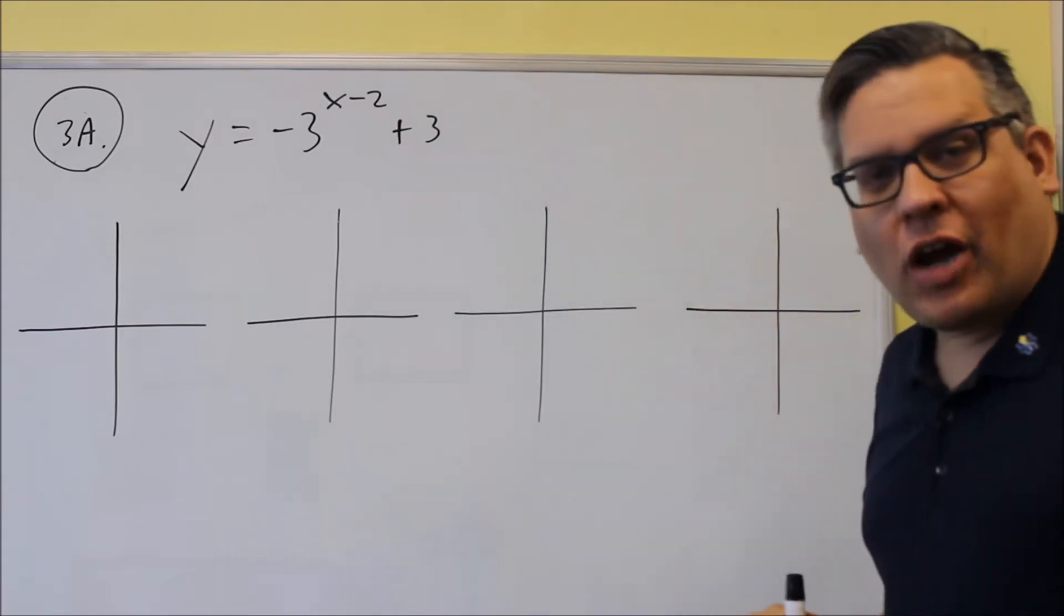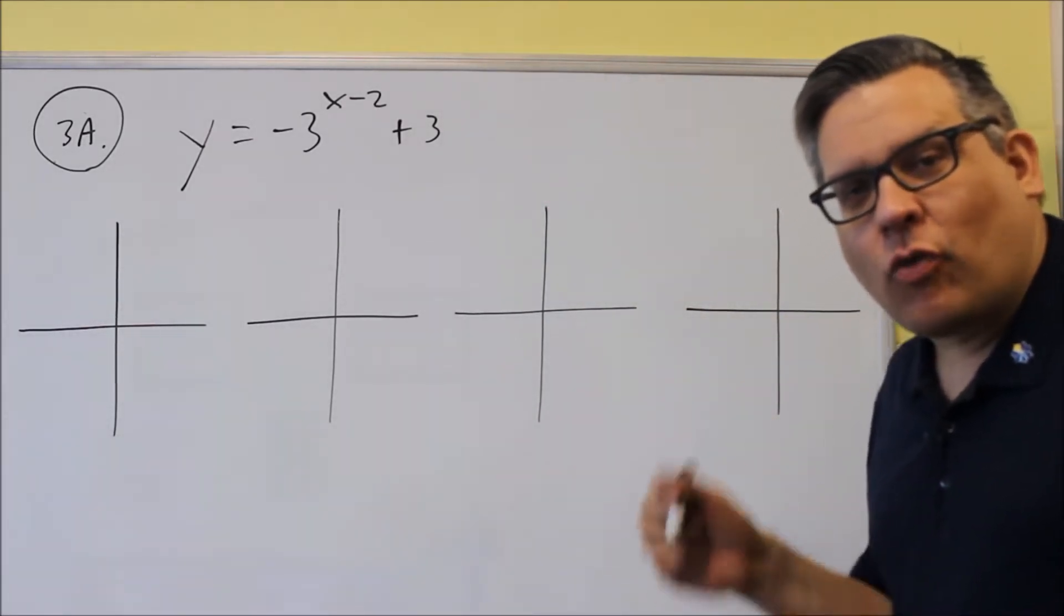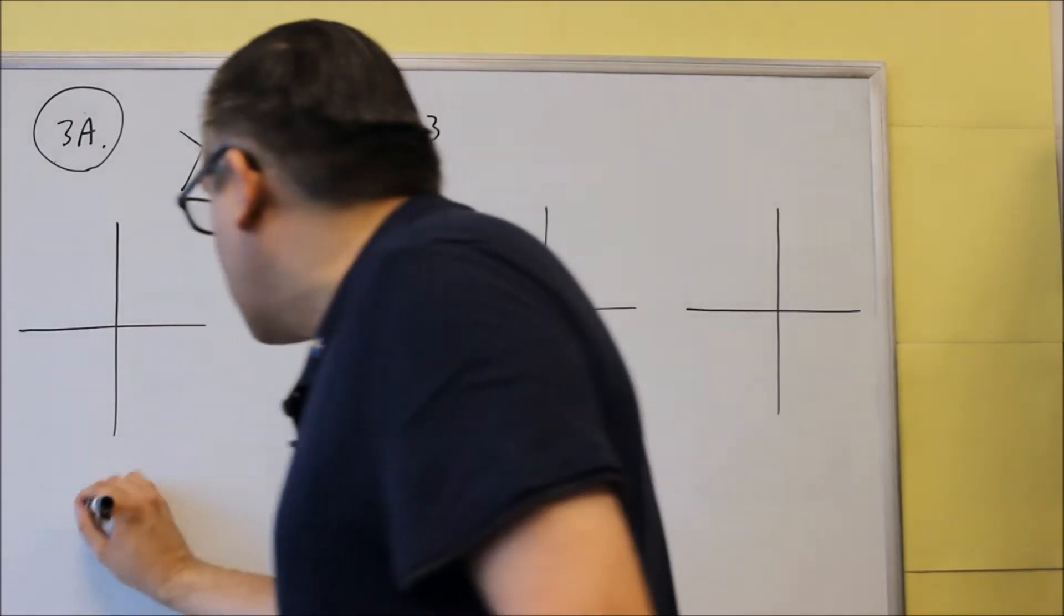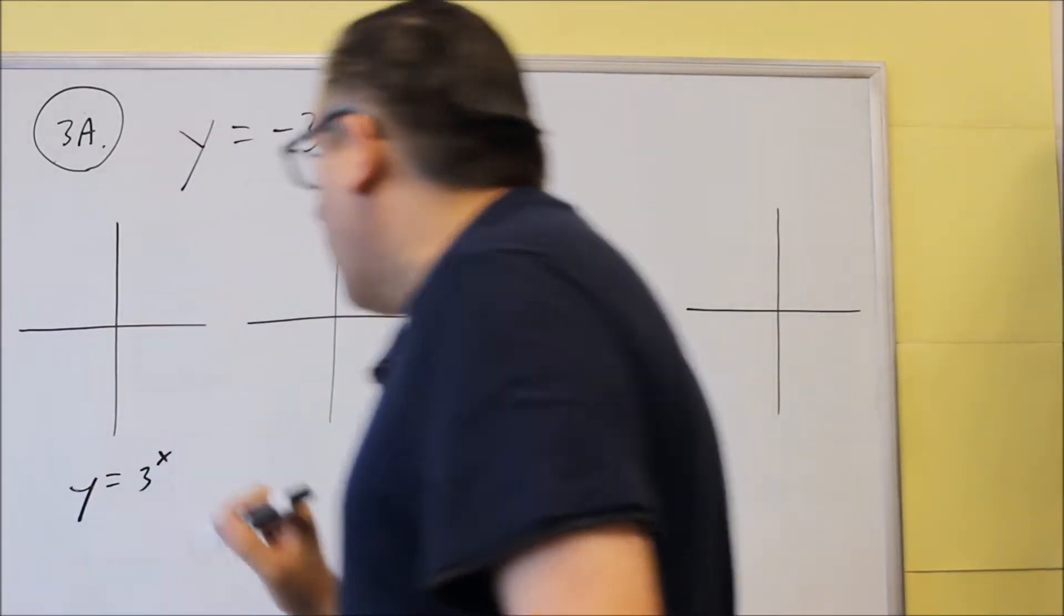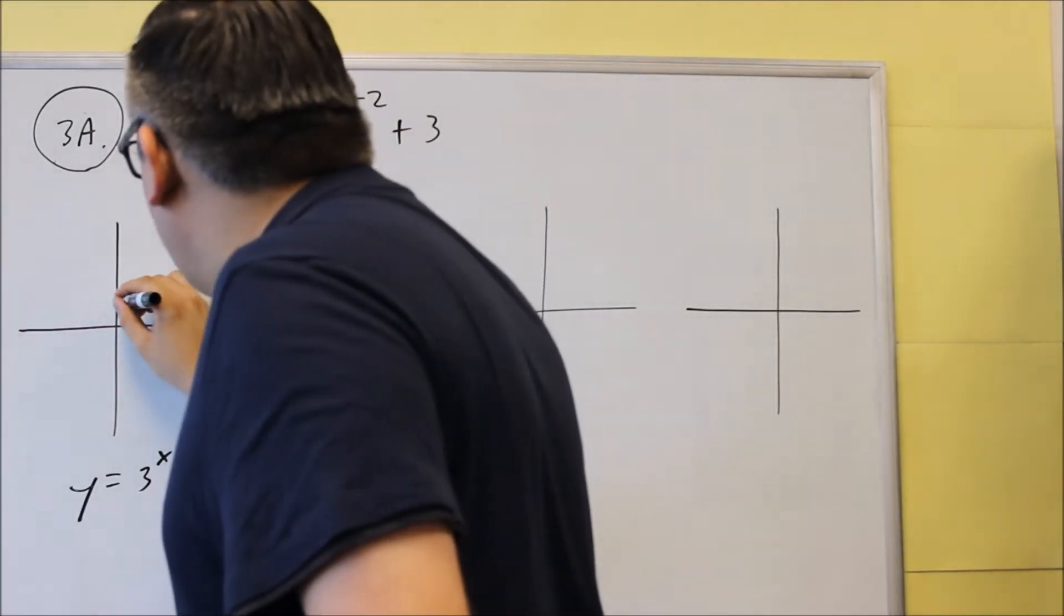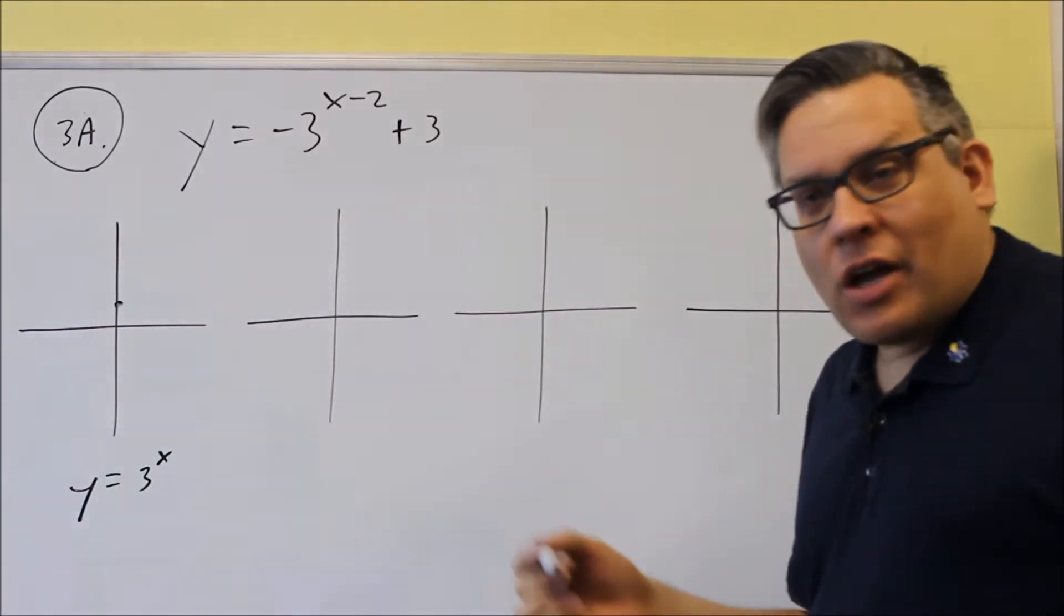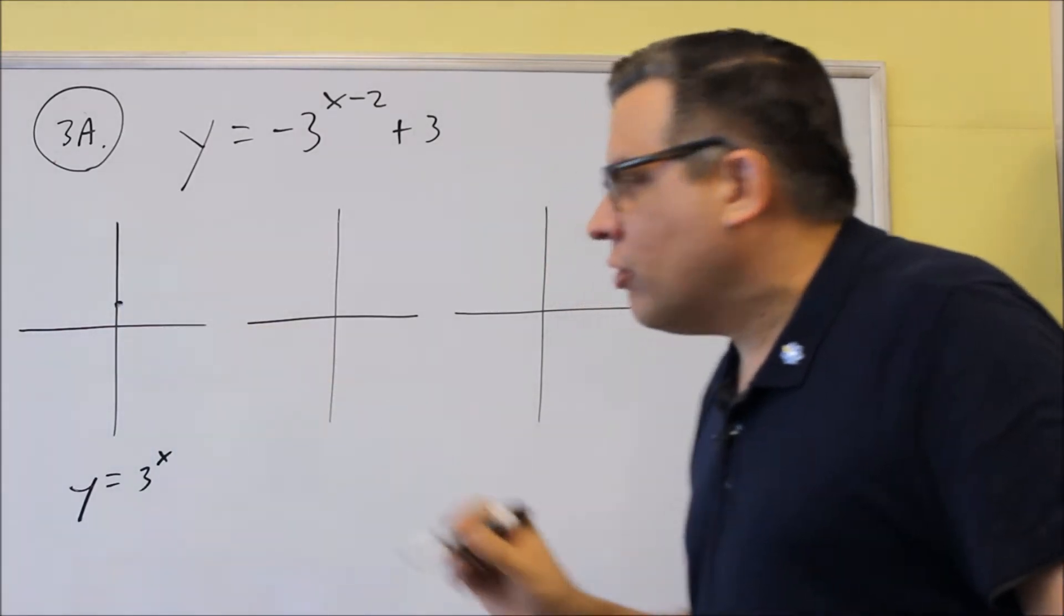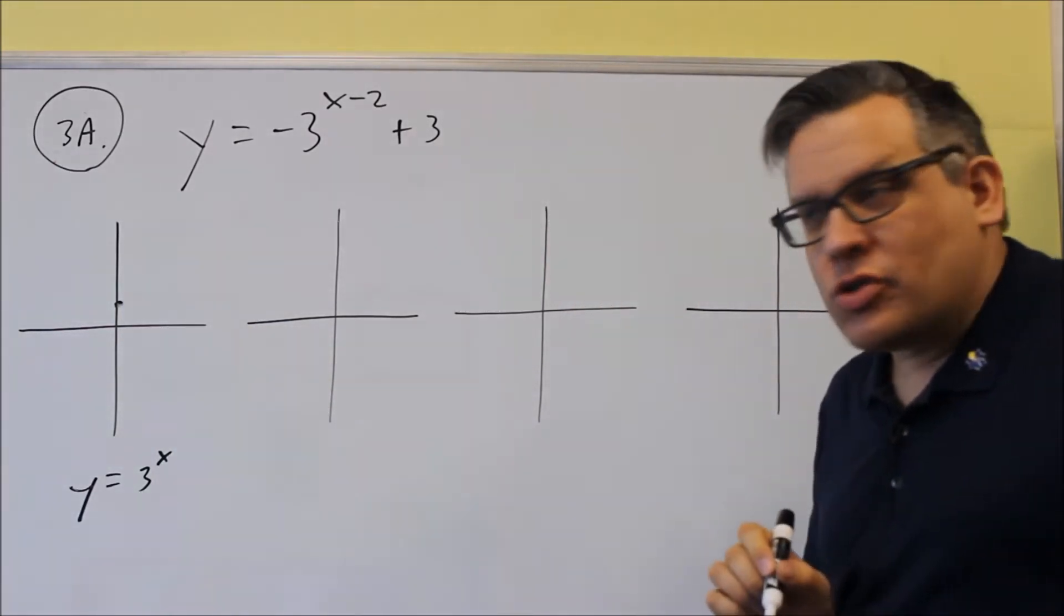Now, it says to use the base graph of y equals 3 to the x. So let's start with that one right here. Now the way that one works is all the exponential graphs, 3 to the x, 2 to the x, they all are going to go through the same point. They're going to go through 0, 1.